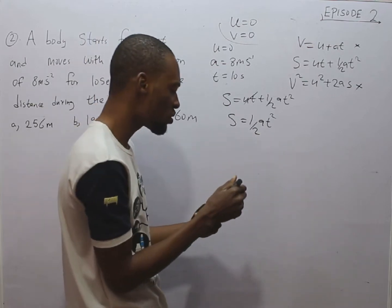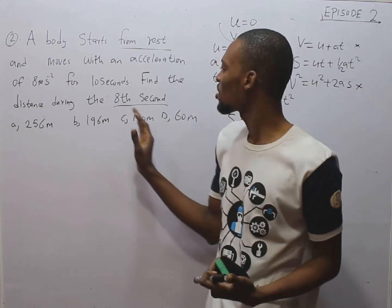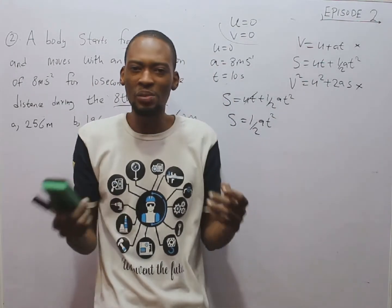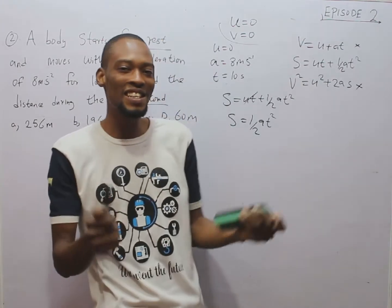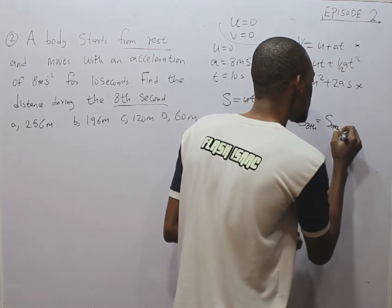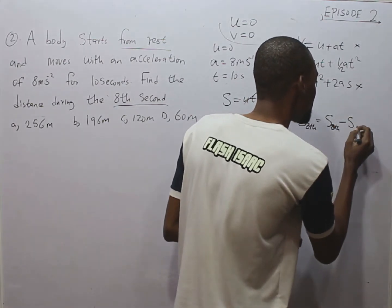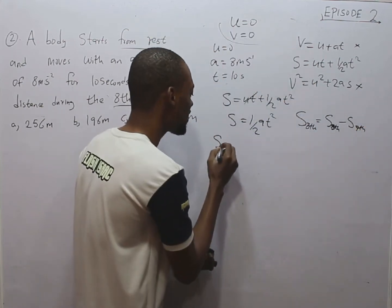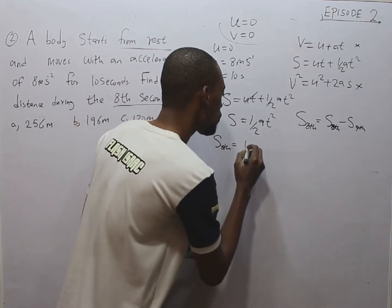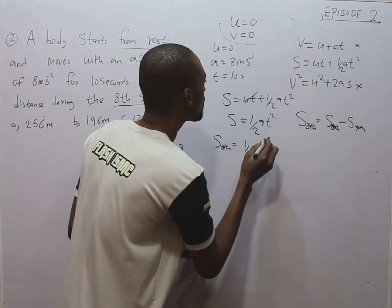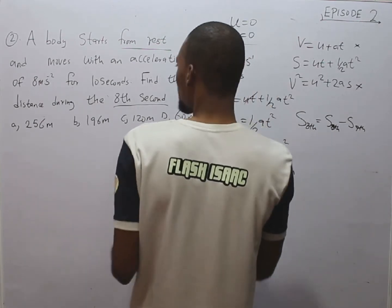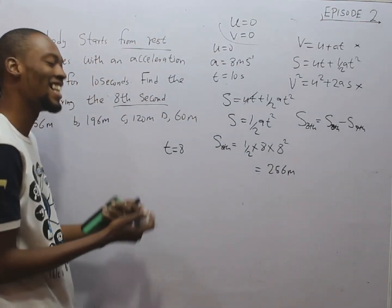Since we are looking for the distance during the 8th second, we don't need the 10 seconds given — it is useless to us, just a distraction. Remember, distance during the 8th second equals distance in 8 seconds minus distance in 7 seconds. For S after 8 seconds, T equals 8, giving us one-half times 8 times 8 squared, which equals 256 meters. If you see option A as 256, do not simply rush and choose it — it is not correct.